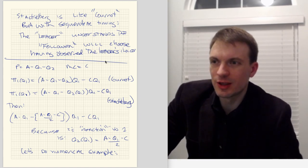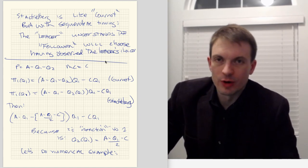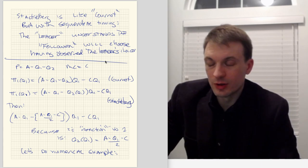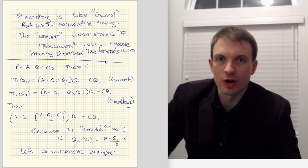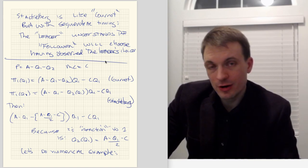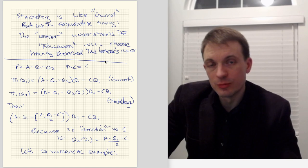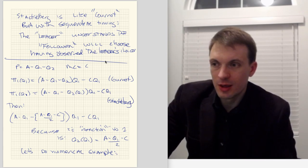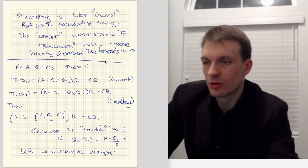Stackelberg is like Cournot, only here we're going to be dealing with sequential timing. So we have a leader-follower structure. We have one firm going first — that's our leader. And then we have our follower who's going to observe what the leader has done and then make their own selection. Otherwise, for all purposes, it's going to be Cournot.